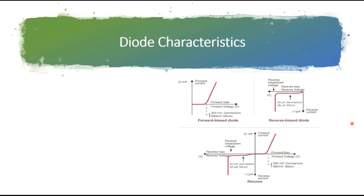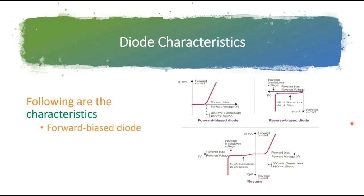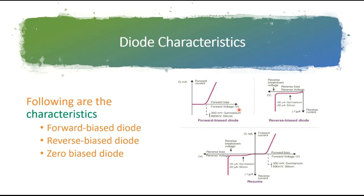Coming to diode characteristics, which we discussed earlier. There are a couple of characteristics of diodes: forward biased diode, reverse biased diode, and zero biased diode. In the graph, the x-axis shows forward bias and forward current on the right side. For reverse bias, it goes to the left showing reverse bias and reverse current. Zero bias is also shown on this graph.